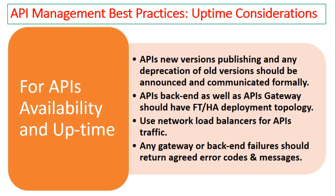In worst-case scenarios where something goes wrong on your gateways or backend services, the error codes and messages returned to clients should be understandable, pre-agreed, and available in the documentation. There should be no sudden surprises — no technical jargon or actual stack traces exposed to API users. Rather, you should have well-formed, understandable, and pre-agreed error codes and error messages passed to clients.